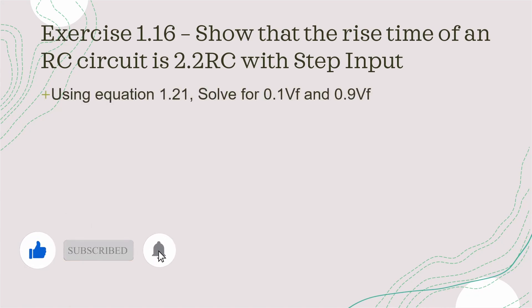The book in equation 1.21 gives us the voltage output at different times when you have an RC circuit. So V out is equal to the final voltage, so in this case that would be 1 volt, and in brackets you have 1 minus e to the power of minus t over RC.